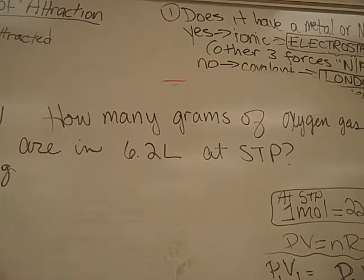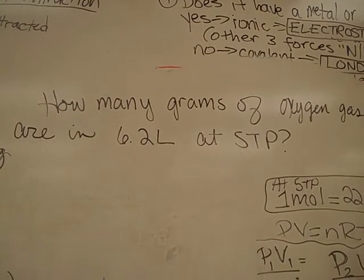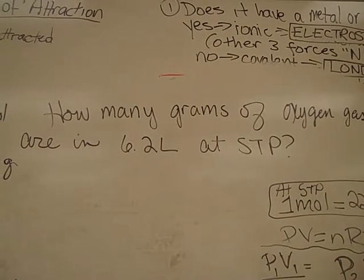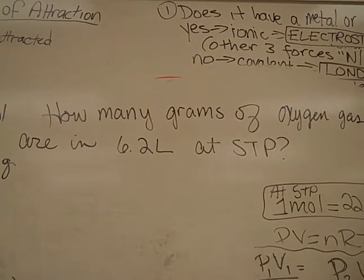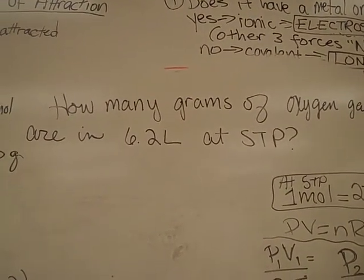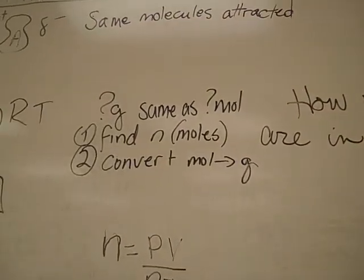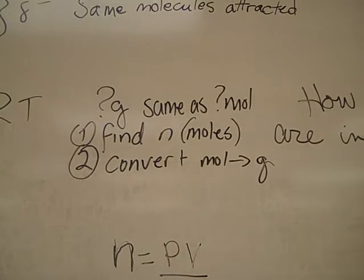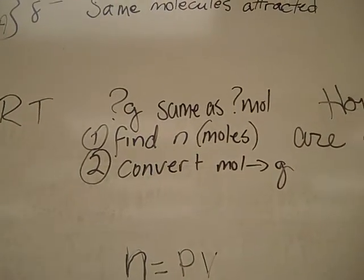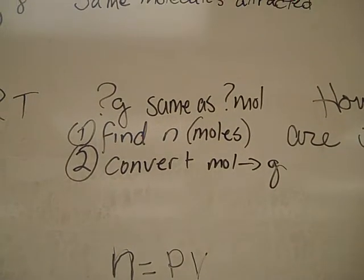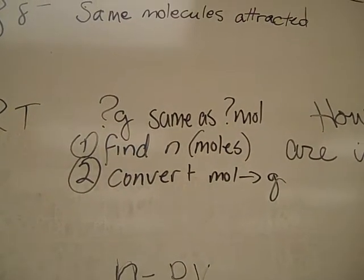To solve a problem like this, whenever you're talking about grams, I want you to think of moles. We have a periodic table filled with units of grams per mole. So whenever someone's saying how many grams, first find the number of moles, and then in the last step you'll be able to convert your moles into grams using the molar masses on the periodic table.